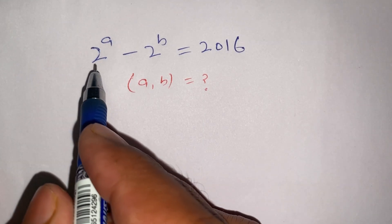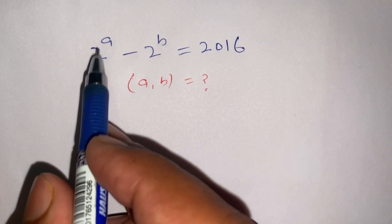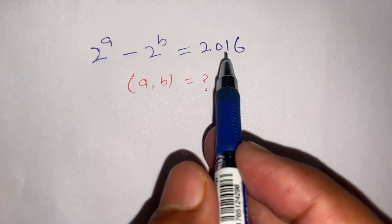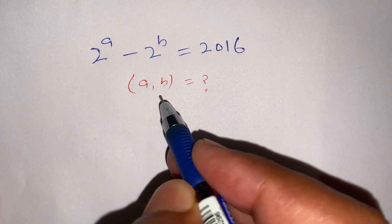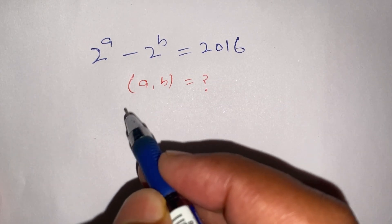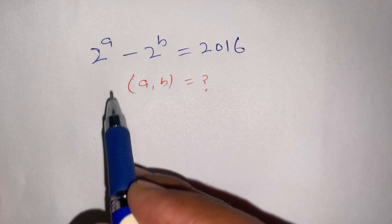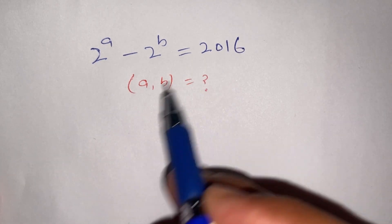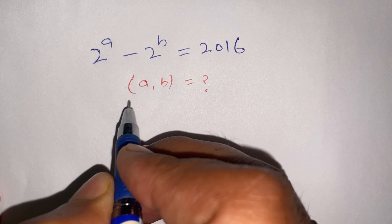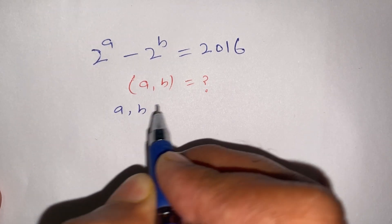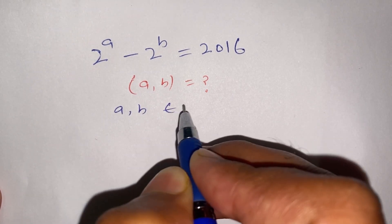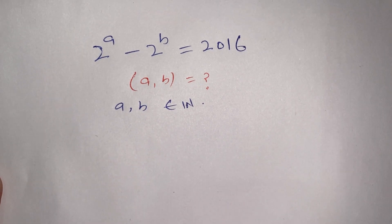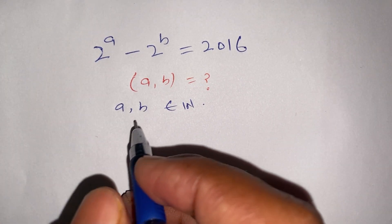Hello everyone. We have a question: 2^a minus 2^b equals 2016, and we have to find its solution — meaning we have to find the pairs (a, b) which satisfy this equation, where a and b belong to the natural numbers. Now let us solve this.